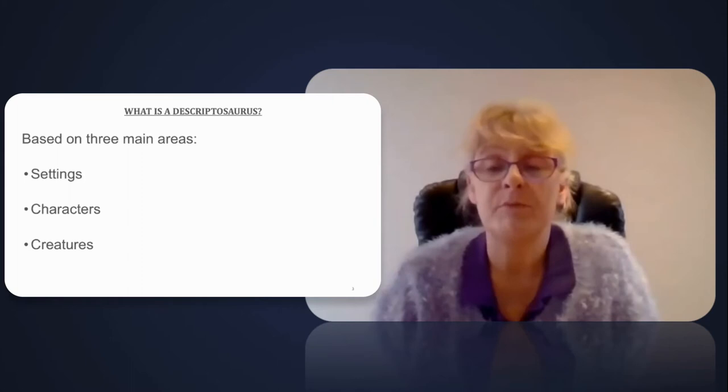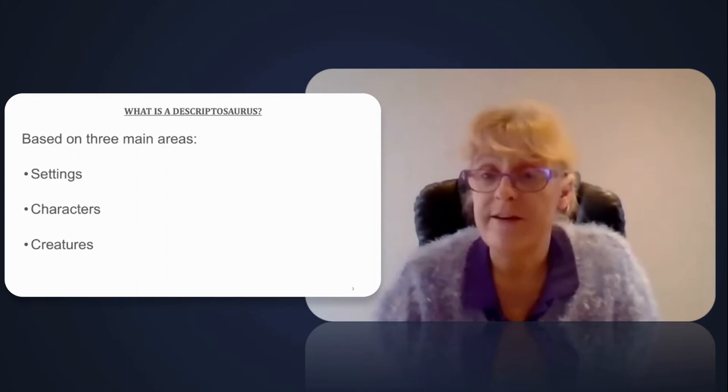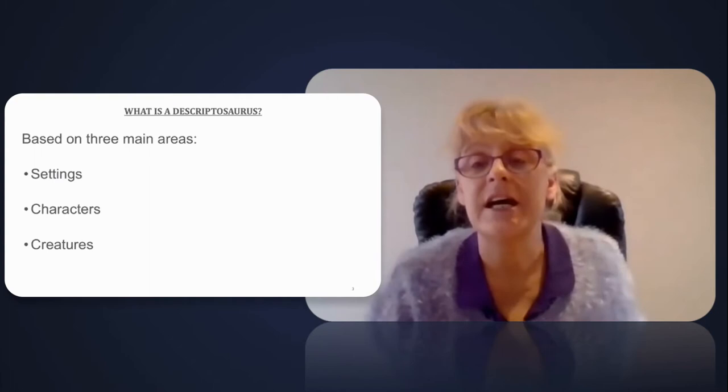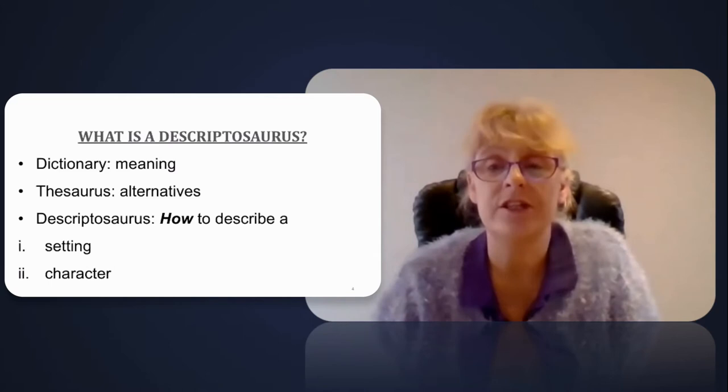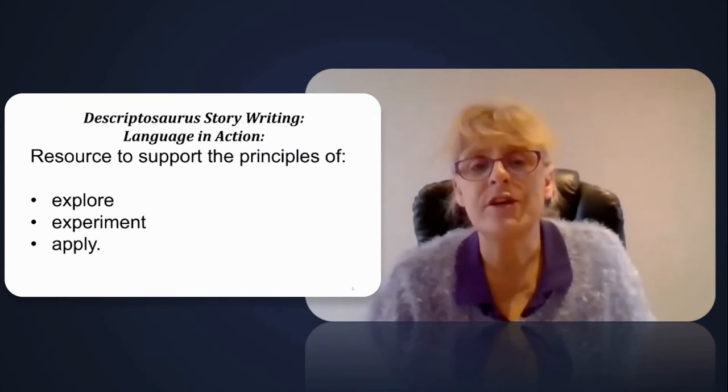characters including appearance, personality and emotions; and finally creatures including pets, which is very important for this age group, and that's split into appearance, personality and abilities. Whilst a dictionary gives the meaning of a word and a thesaurus an alternative, a Descriptosaurus teaches pupils how to describe a setting or character.